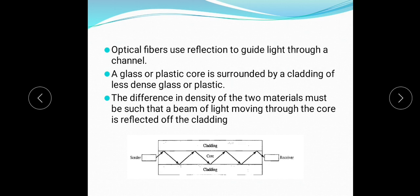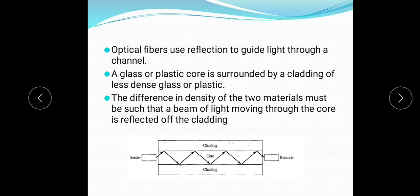This is the basic principle of OFC — optical fiber cable. The core is made up of high density material and the cladding is made up of low density material. When the signal enters from a high density medium to a low density substance, the signal will bend towards the high density material. This is the basic principle of optical fiber cable, known as Total Internal Reflection. This principle will be discussed in the next slides.